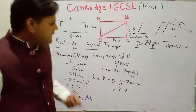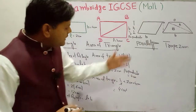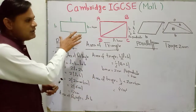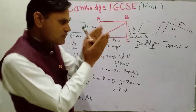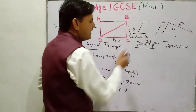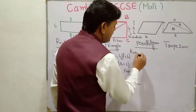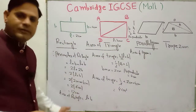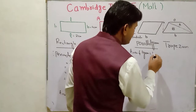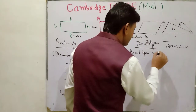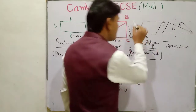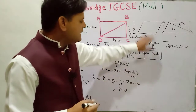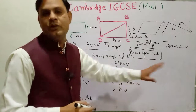Next is the area of a parallelogram. A parallelogram is like a rectangle but its two sides are slanted. Area of parallelogram is equal to — same as the area of rectangle — B multiplied by H, where B means base and H means height. If base and altitude values are given, you put them in to find the area.